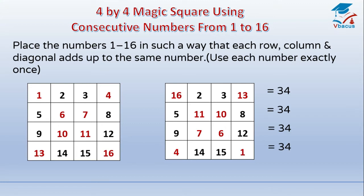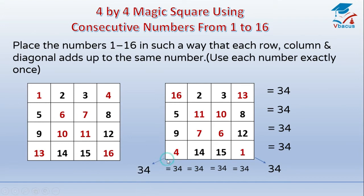16 plus 11 plus 6 plus 1 is equal to 34. Let us see the diagonals: 16 plus 11 plus 6 plus 1 is equal to 34. 13 plus 10 plus 7 plus 4 is equal to 34. So we have seen that all rows, columns, and diagonals add up to the same number. Let us take one more example.